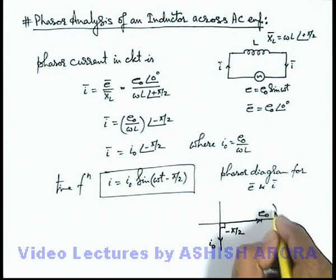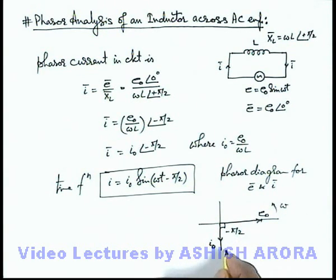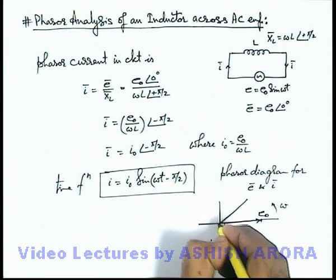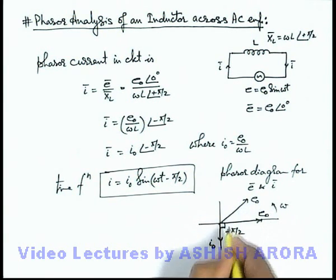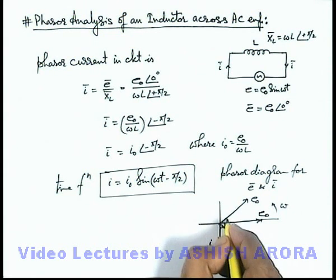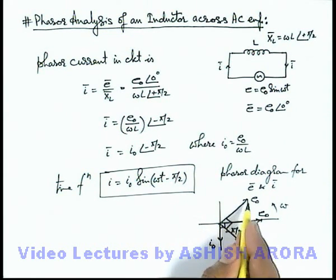And both are rotating, consider to be at an angular speed ω. And if E₀ rotates at an angle θ, then I₀ will also rotate by the same angle, such that always the phase difference between EMF phasor and current phasor is π/2 at every instant.